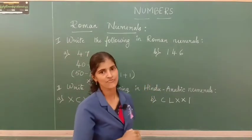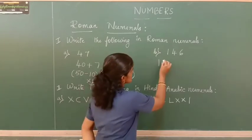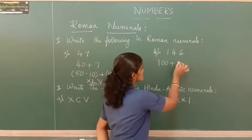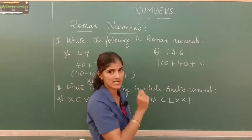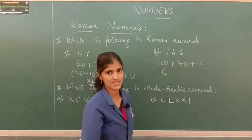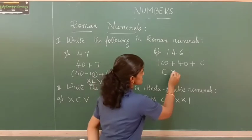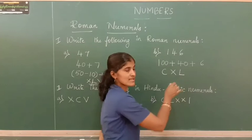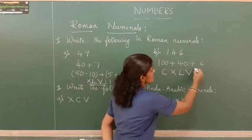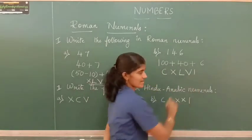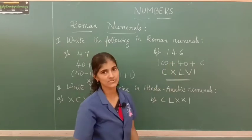Next number: 146. We divide it as 100 plus 40 plus 6. The direct symbol for 100 is C. Then 40 is 50 minus 10, which is XL. And 6 is 5 plus 1, which is VI. So 146 in Roman numerals is CXLVI.